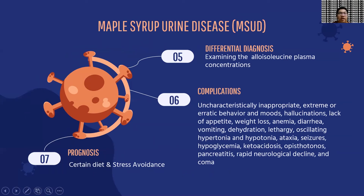The differential diagnosis of MSUD also requires examination of alloisoleucine plasma concentration. Complications of MSUD include weight loss, anemia, diarrhea, vomiting, dehydration, and others. Certain dietary interventions have been shown to work, and stress avoidance has also shown positive results.